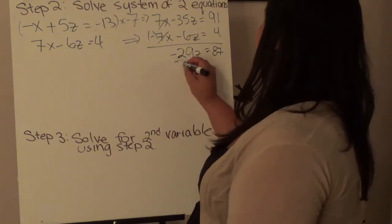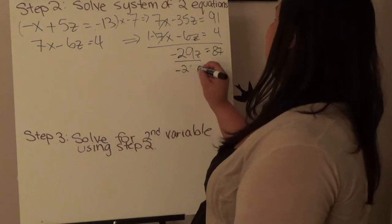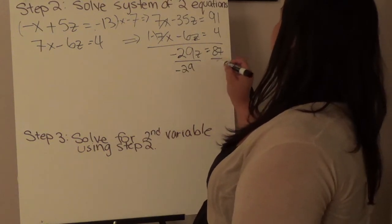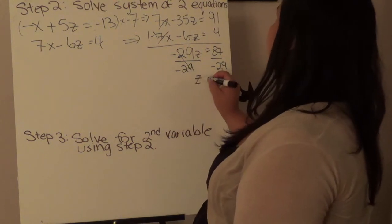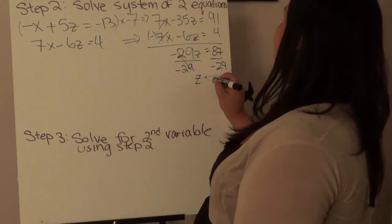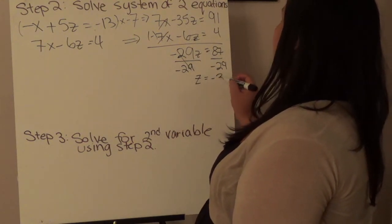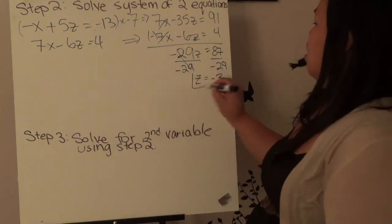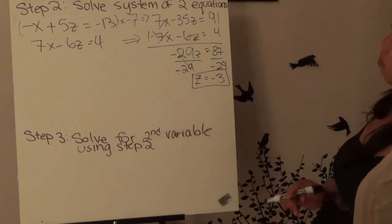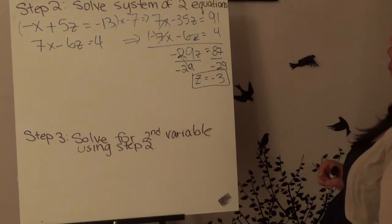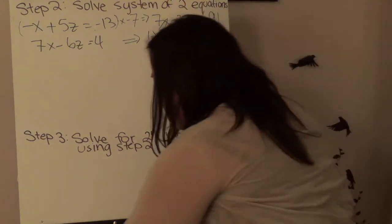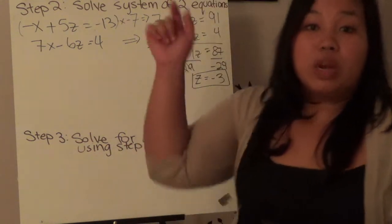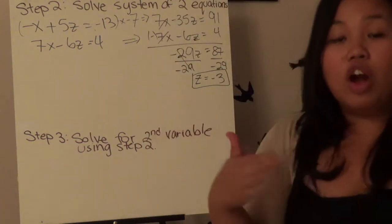Dividing both sides by negative 29, this cancels out, and I end up with my first answer: z equals negative 3. Now, from there, it's just a series of substitutions — we're going to plug in and solve for all the other variables. We're no longer doing elimination; we're just substituting.